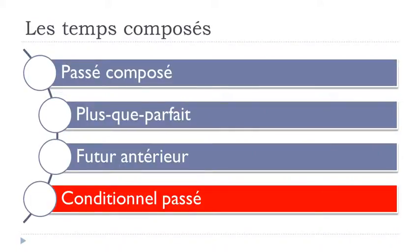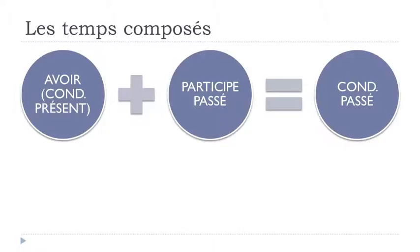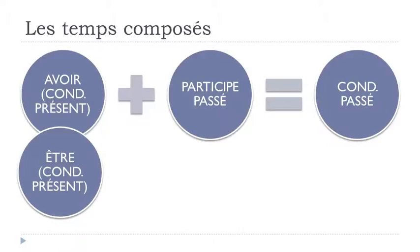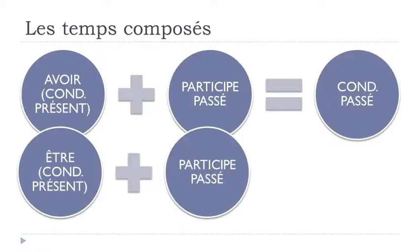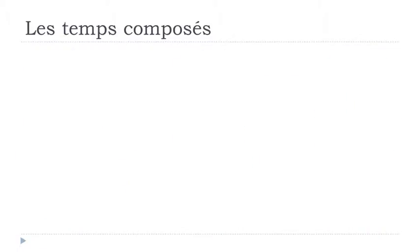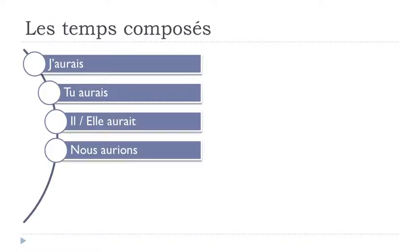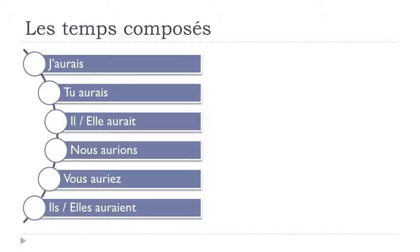The last composed tense we saw was le conditionnel passé. Remember: first avoir — in priority — at the conditionnel présent form, then the participe passé, and you get your conditionnel passé. Or, for the same cases as passé composé, futur antérieur, and plus-que-parfait, use être at the conditionnel présent form, then the participe passé. Let's see avoir at the conditionnel présent: j'aurais, tu aurais, il aurait, elle aurait, nous aurions, vous auriez, ils auraient, elles auraient.